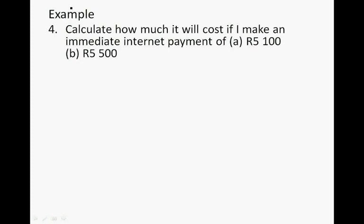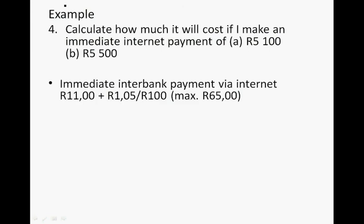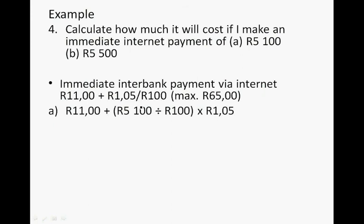Question 4: Calculate how much it costs to make an immediate internet payment of R5,100. The formula is R11.00 plus R1.05 for every R100. So R5,100 divided by 100 gives 51, multiplied by R1.05 equals R53.55, plus R11.00 gives R64.55.